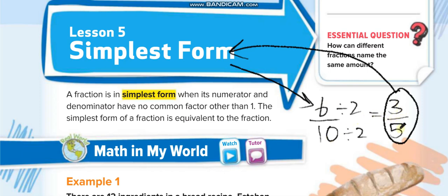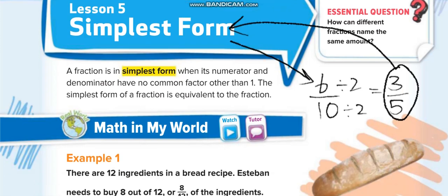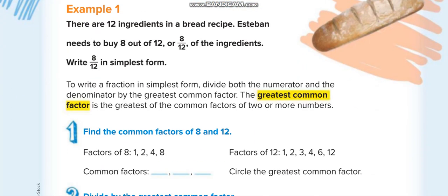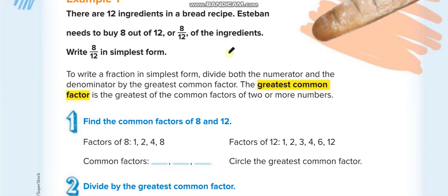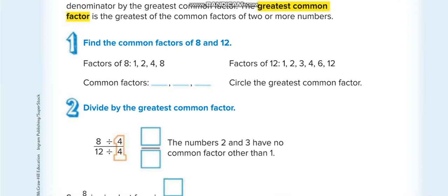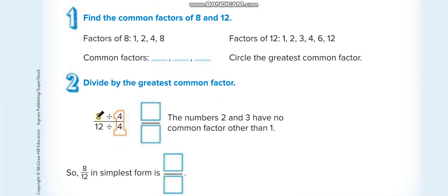After making the simplest form, we check again — can we divide further? Is there any number we can divide 3 and 5 by, the same number up and down? No, so 3 over 5 is the simplest form. Now let's look at the fraction 8 over 12.